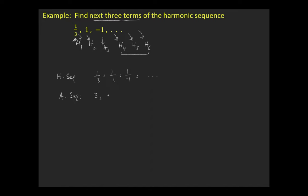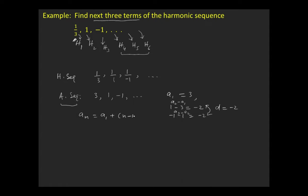The arithmetic sequence is 3, 1, −1, and so on. The first term a1 = 3, and the common difference d = −2 (subtracting consecutive terms gives −2 in both cases). The general term of this arithmetic progression is: an = 3 + (n−1)×(−2) = 3 − 2n + 2 = 5 − 2n.